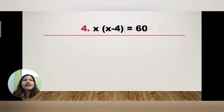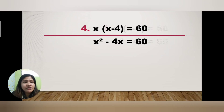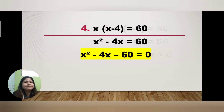Example four: x(x − 4) = 60. We will use the distributive property — distribute x to x and to −4: x times x is x², and x times −4 is −4x, so x² − 4x = 60. Transpose 60 to the left side: x² − 4x − 60 = 0. That's the final answer.